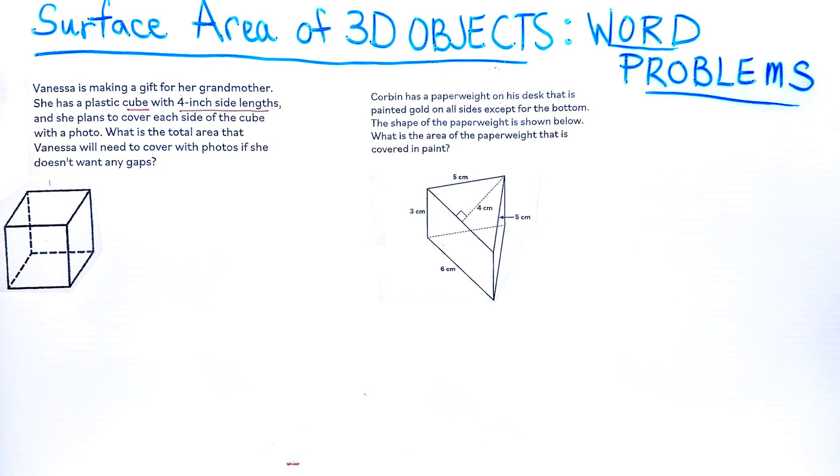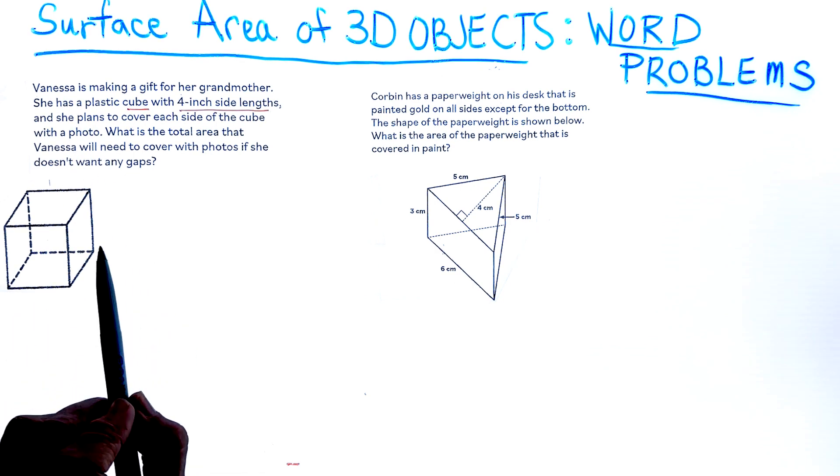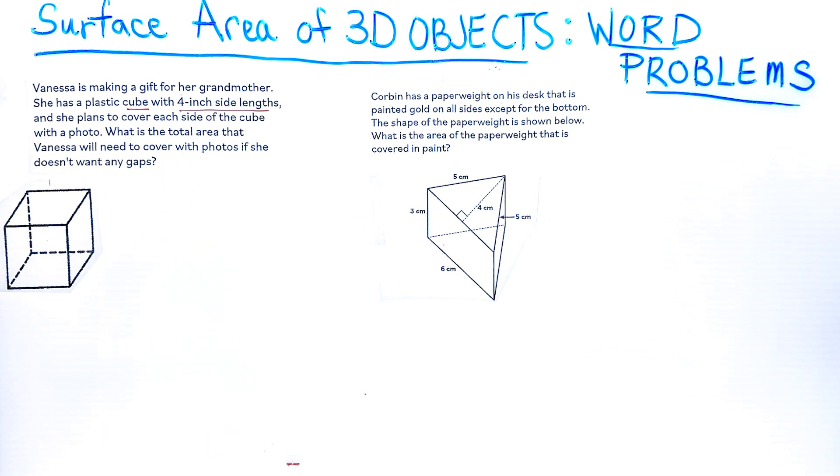For this lesson we are going to be finding the surface area of 3D objects and their word problems. We're going to read the problem, mark the text, and then use our formulas to find the surface area. Remember, surface area is found when you want to paint something or wrap something.